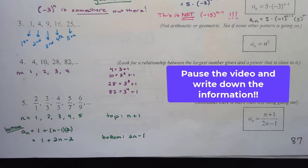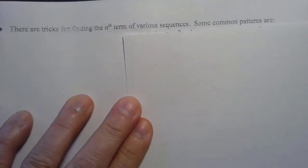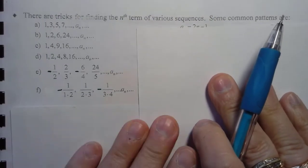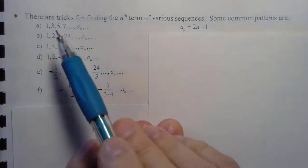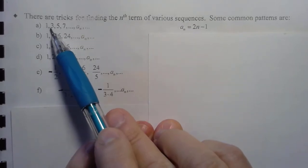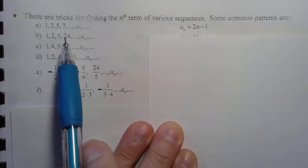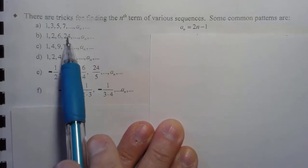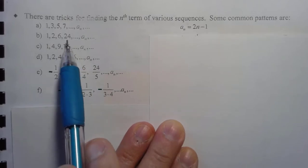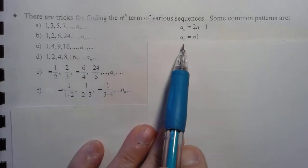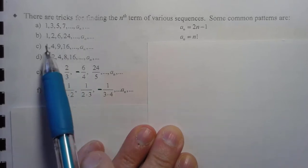There are some tricks with finding various sequences. Notice that these are odd numbers: 2n minus 1. The first term is 1, the second term is 3, so 2 times 2 minus 1. These appear to be evens, and this looks like 4 times 3 — these are my factorials: 1 factorial, 2 factorial, 3 factorial, 4 factorial. These appear to be squares.